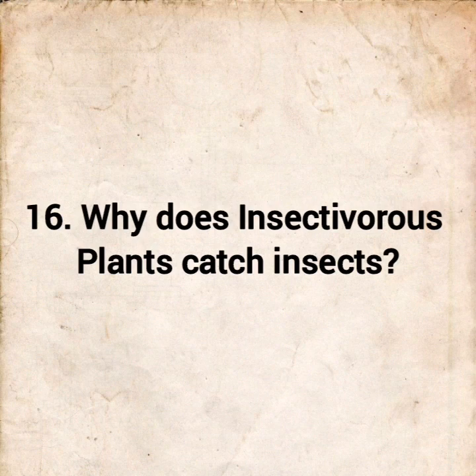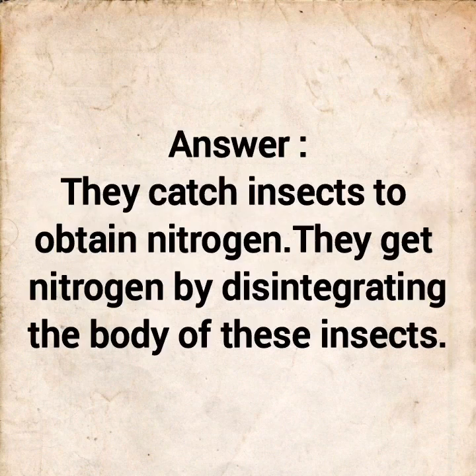Question 16: Why do insectivorous plants catch insects? Answer: They catch insects to obtain nitrogen. They get nitrogen by digesting the bodies of these insects.